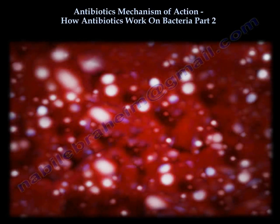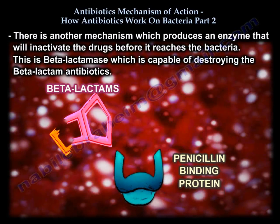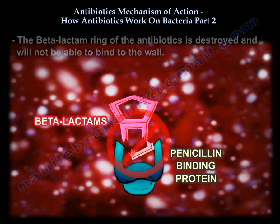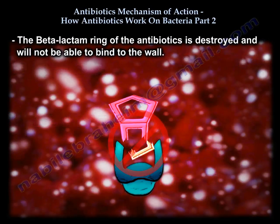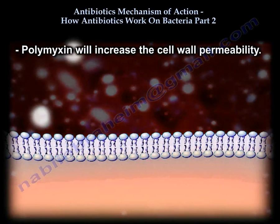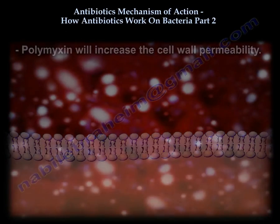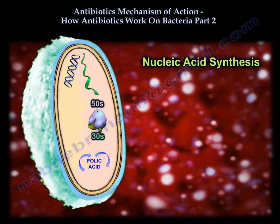Another mechanism is when bacteria produce an enzyme that inactivates the drug before it reaches its target — this is the beta-lactamase enzyme, which is capable of destroying beta-lactam antibiotics. The beta-lactam ring of the antibiotic is destroyed and cannot bind to the receptor on the cell wall. Polymyxin increases cell wall permeability. Folic acid synthesis inhibitors include sulfa and bactrim.